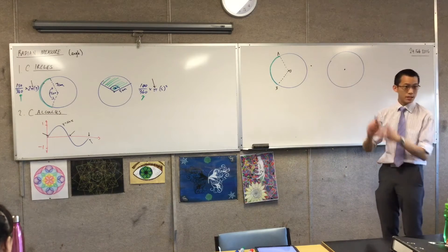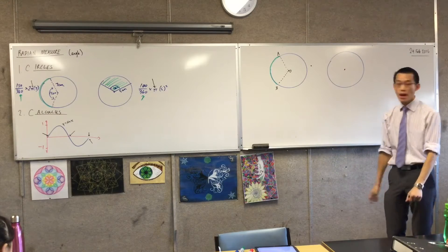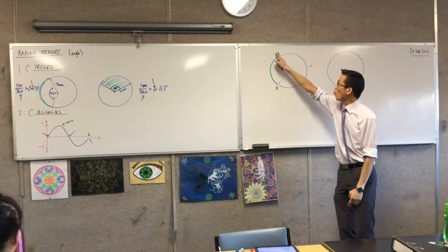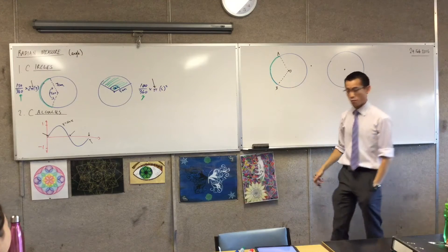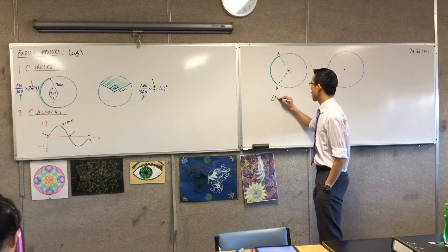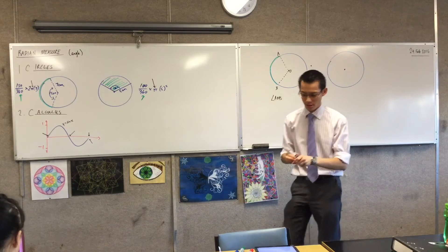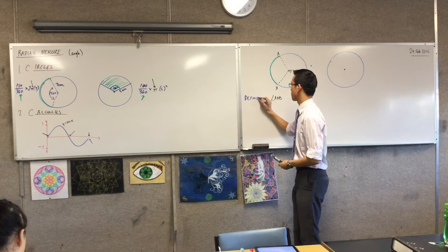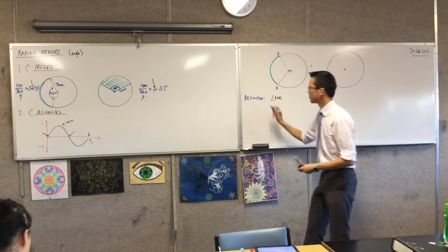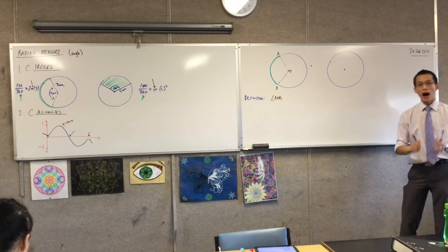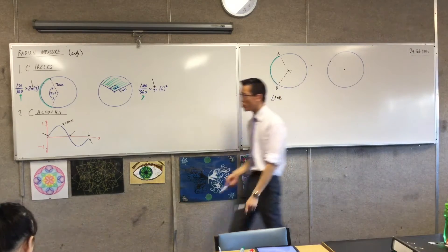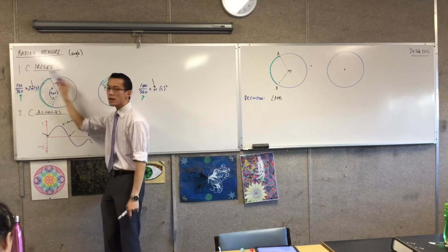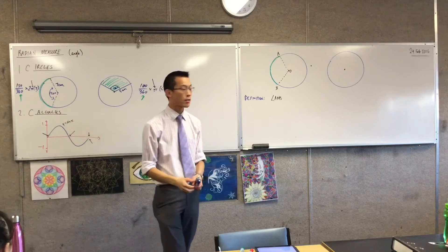So what I've got here is a circle, generic circle. And I want to define, so this is my definition, here it comes, for what is the size of this angle AOB. So AOB, this is my definition, so I'm going to write that, and then I'm going to put some boxes around this in a second.